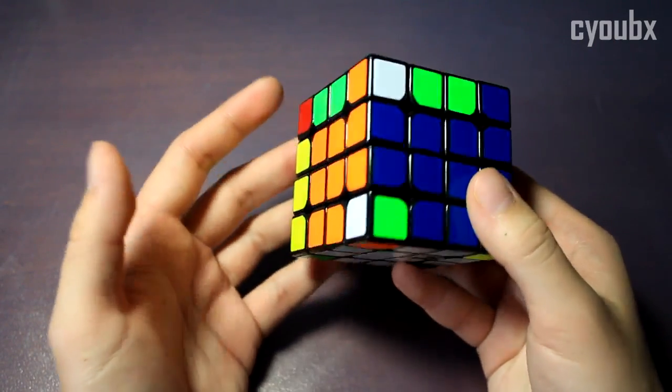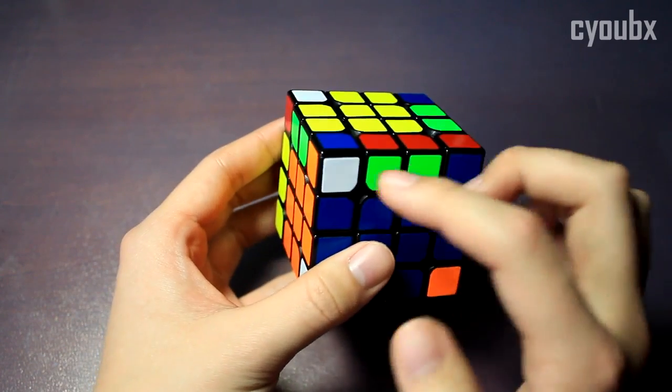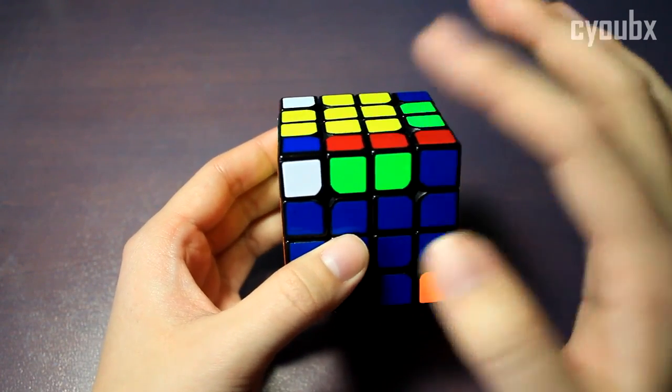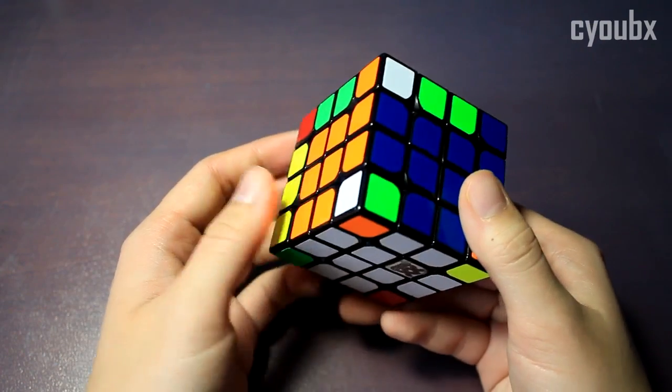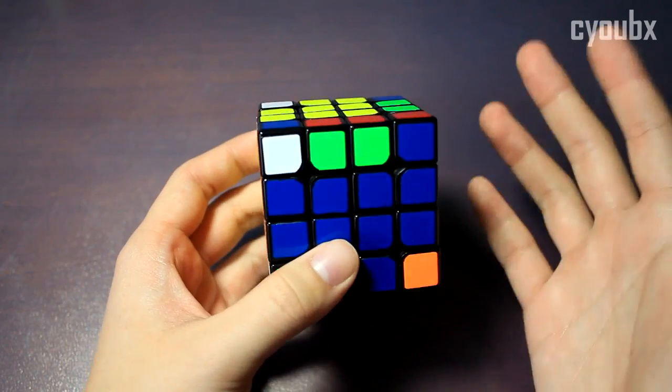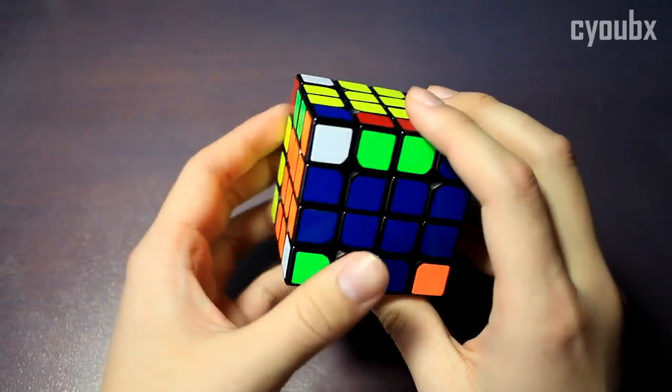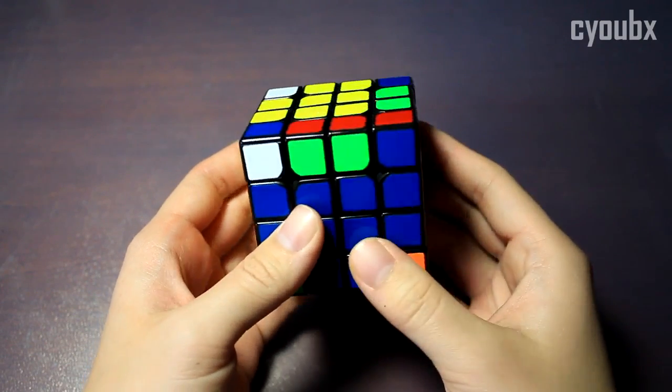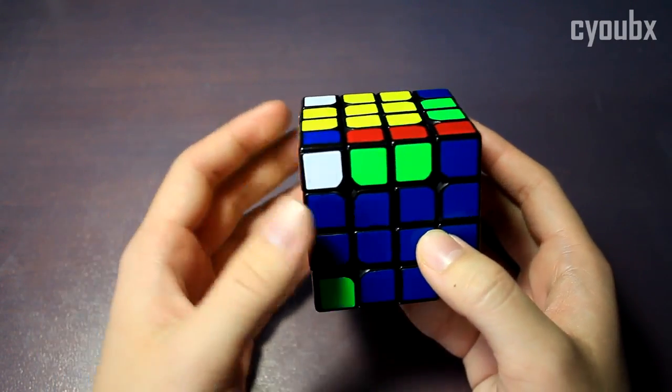So that is the basics of 3-2-3. And as you can see, very few cube rotations, very easy look ahead, and very move efficient. So for most of you, this video will probably end here. You don't really need to watch the rest of this because it's all very intuitive.